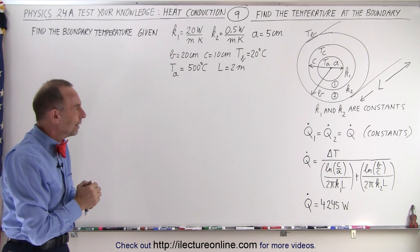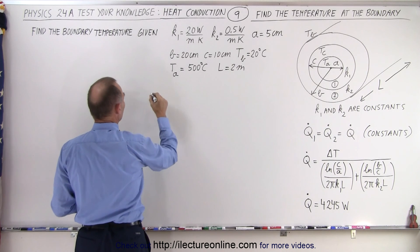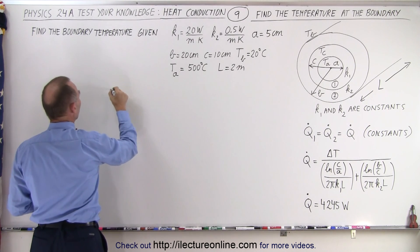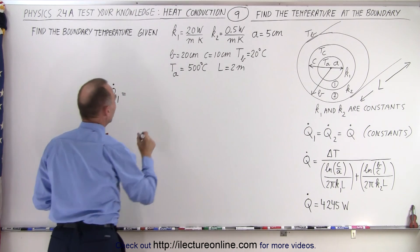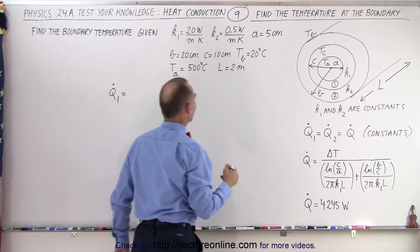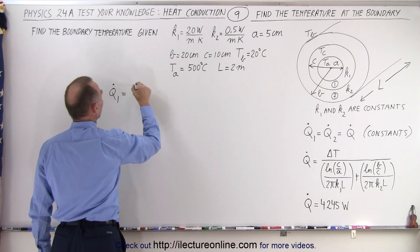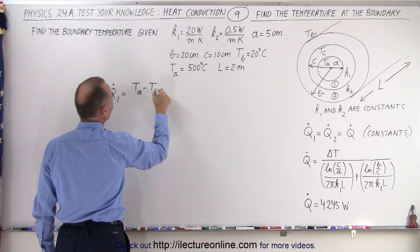What we can say then is that Q1, if we then separate the heat flow to each layer, we can say that Q1 or Q.1 is going to be equal to the difference in the temperature between the inside and the boundary. So that would be, in this case, T_A minus T_C.